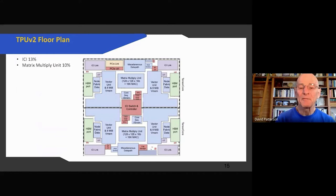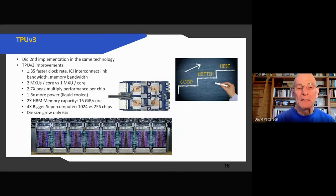This is the floor plan of what the chip looks like. The dividing line in the middle shows the two cores, an upper core and a lower core. The matrix multiply units, only 10 percent of the chip. Interestingly, the ICI links there in purple are just about 12 percent of the chip. Google did a second implementation in the same technology after doing it. They thought that with a little bit more work they could do another one that would be even better.